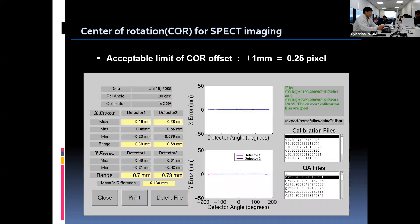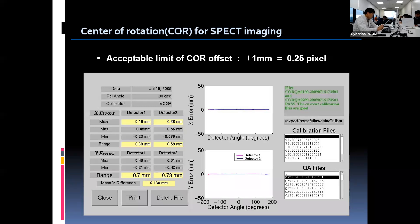When the acquisition is done, the computer calculates the correction factor for variation of the detector position. This is the COR test report that the computer generates. The alignment should be checked in both x- and y-axis. Manufacturers provide software for alignment, calculation, and correction for COR variation so that offsets are easily corrected by the computer. The acceptable COR offset limit is ±1 mm, which corresponds to 0.25 pixel.